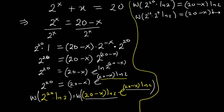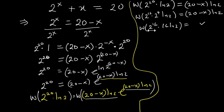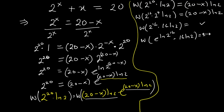We can write 2^20 as 2^16 times 2^4. So 2^20·ln 2 becomes 2^16·16·ln 2. Now we can introduce e raised to ln(2^16) times 16·ln 2, so that we can take the W function. This gives us e^(16·ln 2)·16·ln 2, which means W of that equals 16·ln 2.